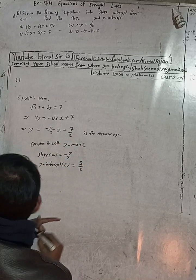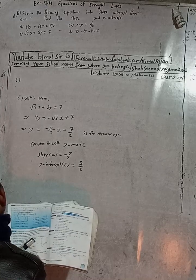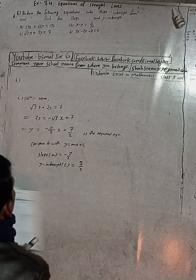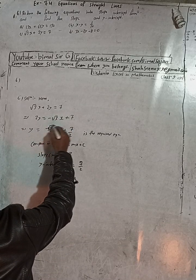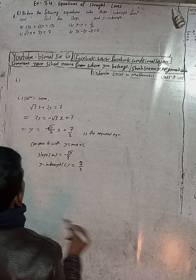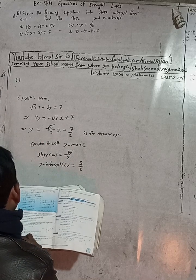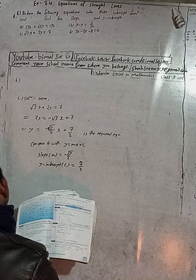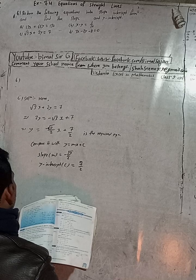Let me check the book answer for 6c. The equation is y equals minus root 3 by 2 x plus 7 by 2. Note: we initially forgot to write root 3, but now it is correct. Slope is minus root 3 by 2 and y-intercept is 7 by 2. Correct.